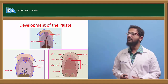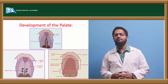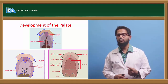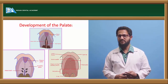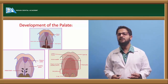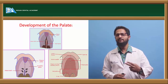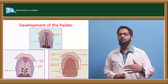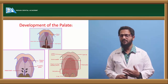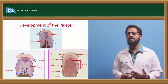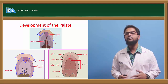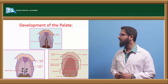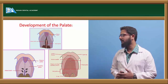Now let us understand how the development of the palate takes place. The palate is developed by the contribution of three things: first, the frontonasal process; second, the maxillary process; and third, the palatal shelves given off from the maxillary process. There are actually two parts of the palate — primary palate and secondary palate. The frontonasal process contributes the primary palate, and the secondary palate is formed by the contribution of palatal shelves given off from the maxillary process.